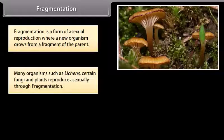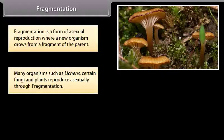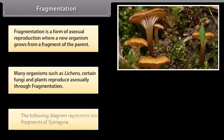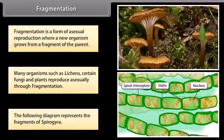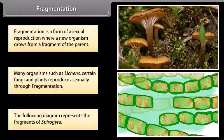Fragmentation is a form of asexual reproduction where a new organism grows from a fragment of the parent. Many organisms such as lichens, certain fungi and plants reproduce asexually through fragmentation. The following diagram represents the fragments of Spirogyra.